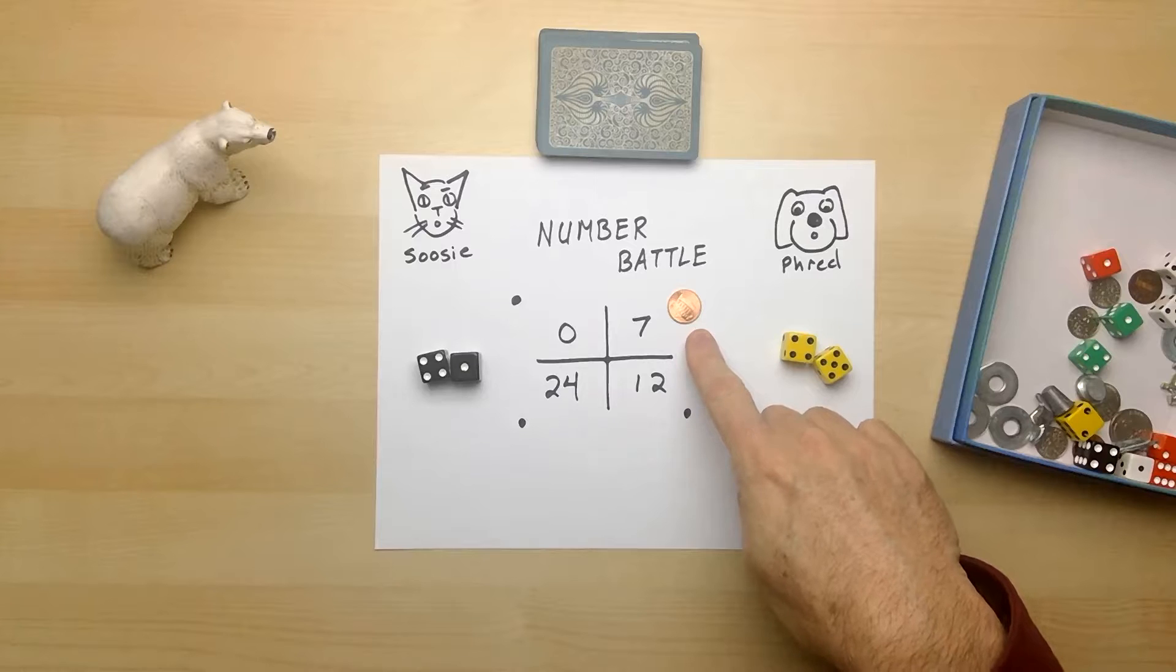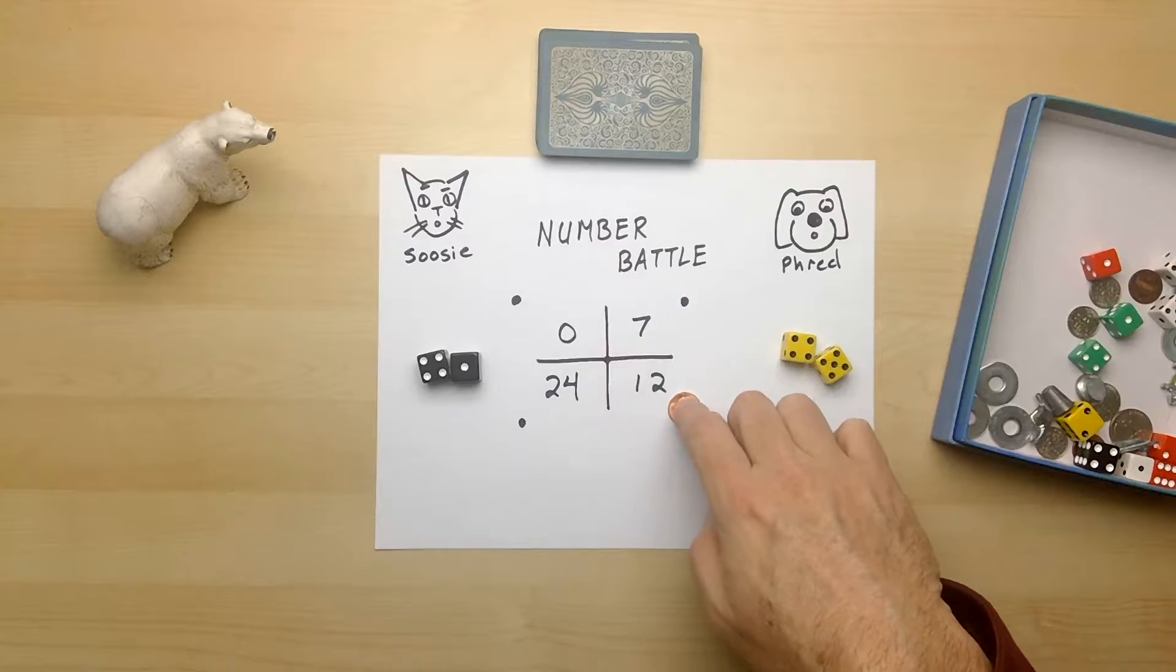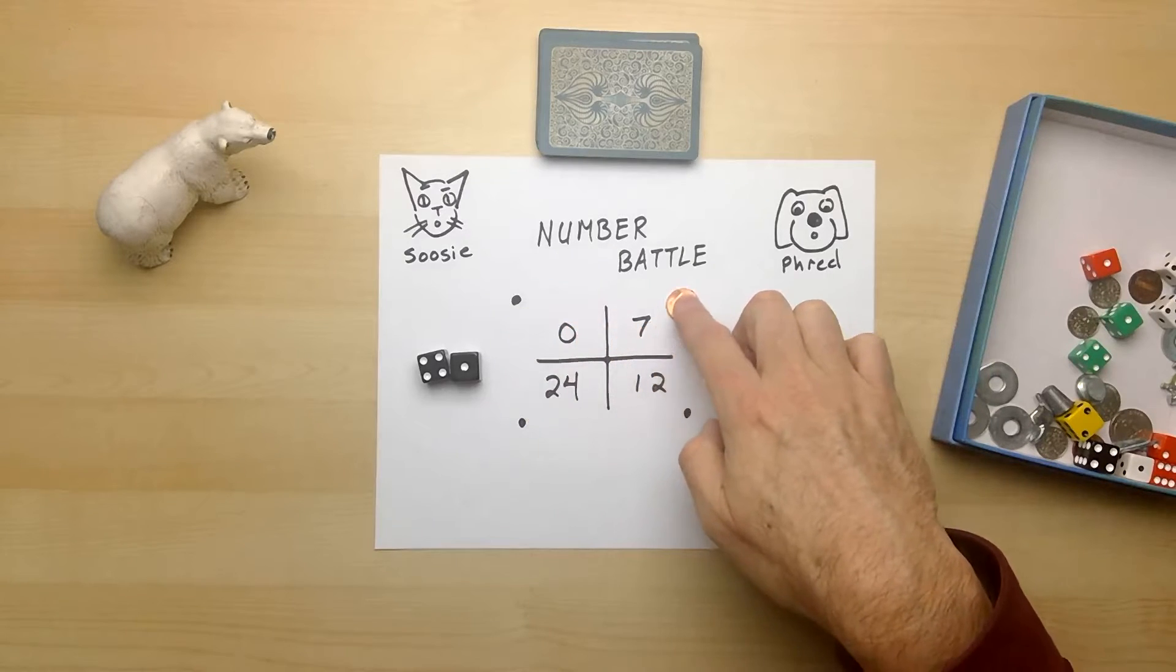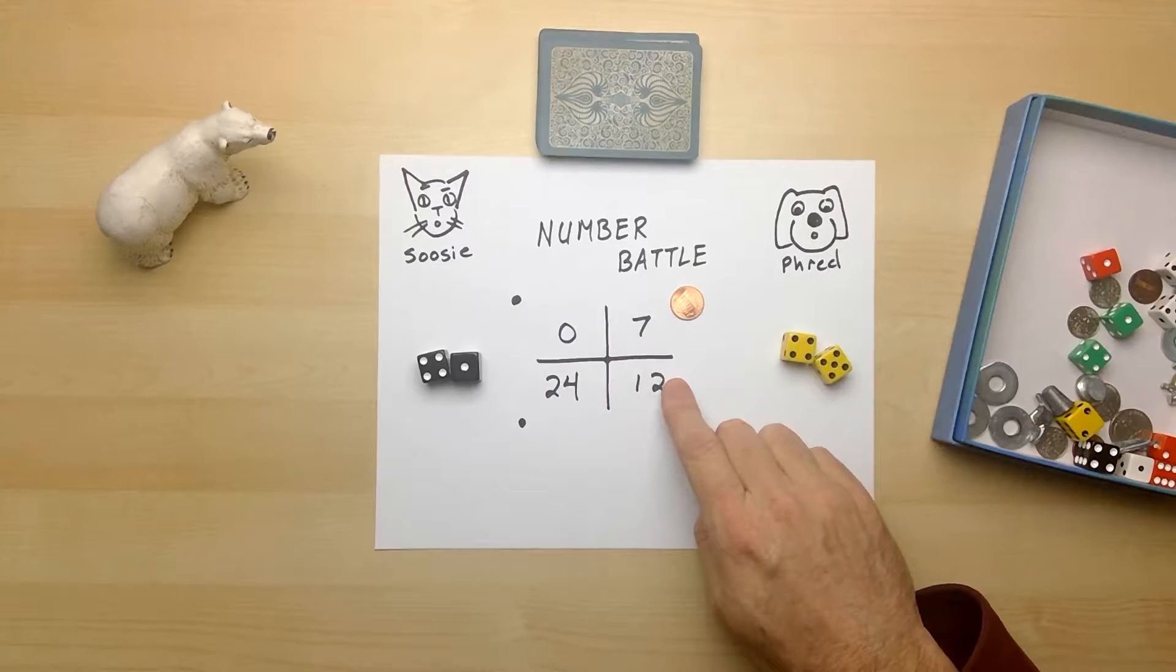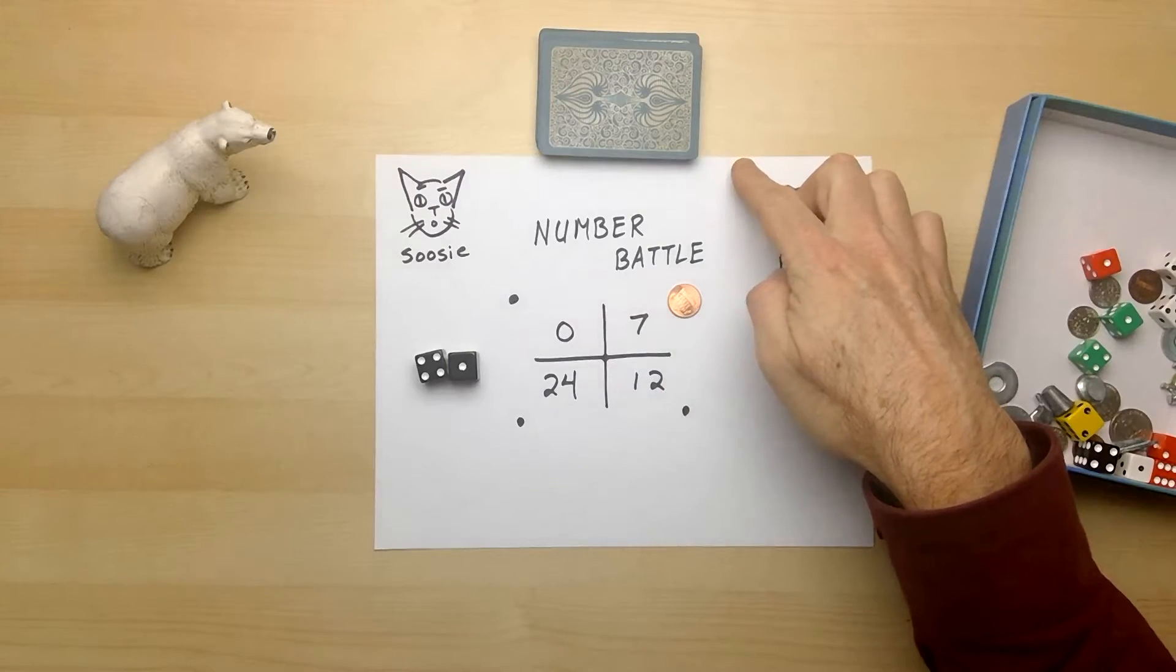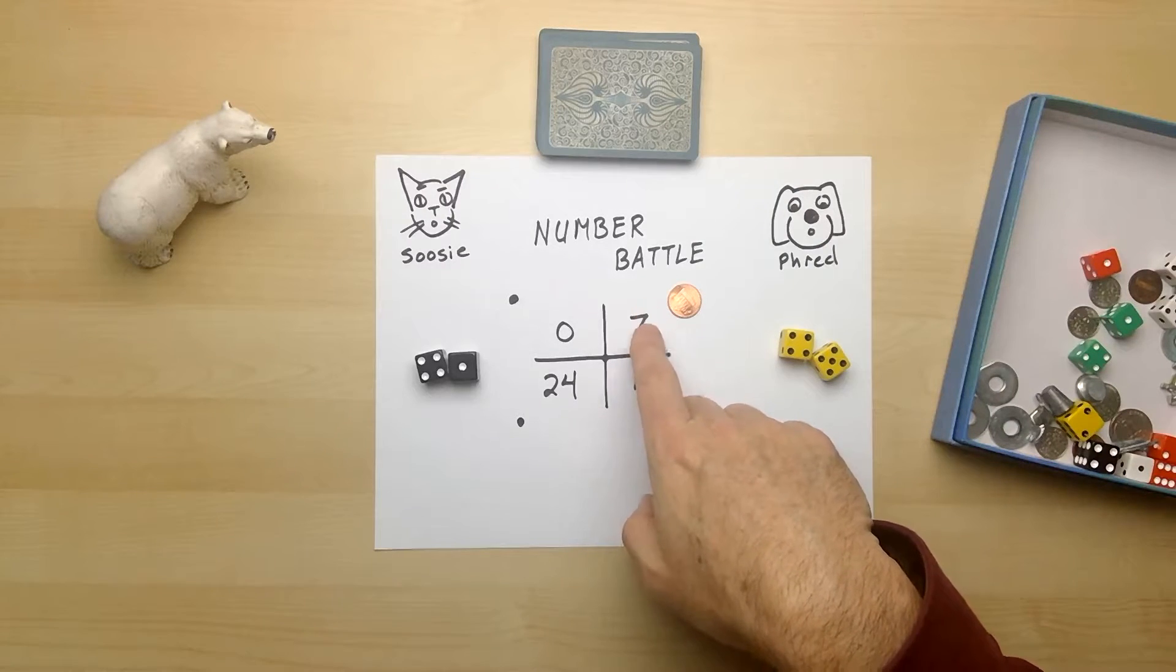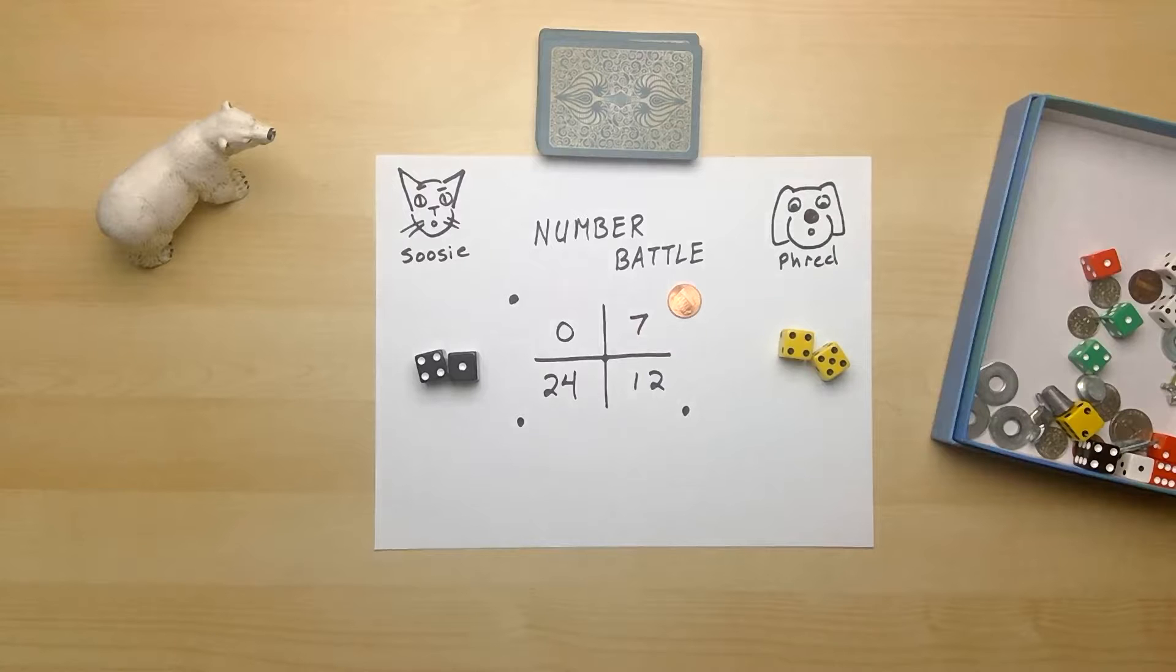Now with each turn, we want to change the number that's going to matter to us. So seven to start with, 12, 24, and zero. Now how this number matters is that you're going to be using the numbers on the dice and one of the cards to try to make the number that's closest to the number in the middle, the number battle number. So let's give it a try.